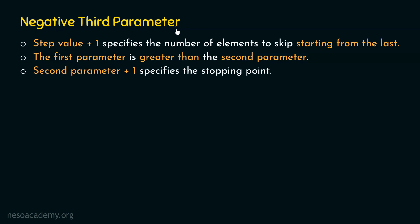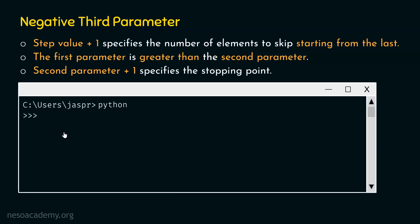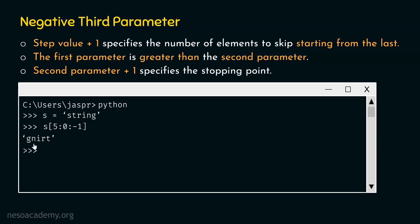Let's see one more example to solidify this concept. We go to the command prompt, activate the Python interactive shell, and type s equal to 'string', then hit enter. Next, we type s[5:0:-1]. I want you to pause this video and try to find the string we will obtain. The answer is 'g n i r t' — this substring.